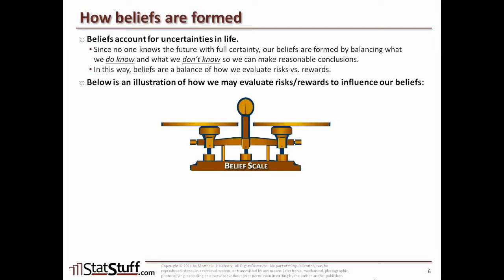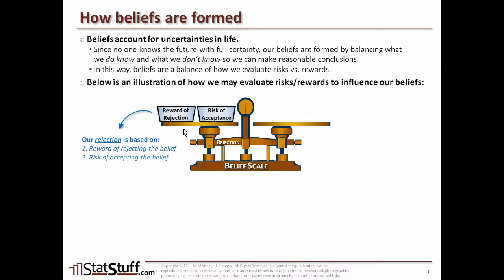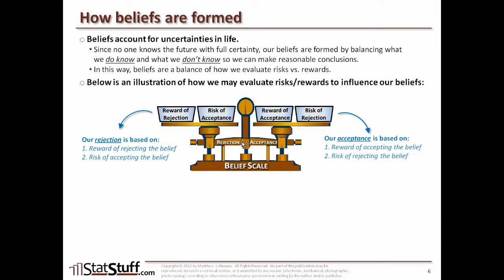To illustrate this, consider a belief scale. On one side is rejection of a belief, filled by the reward of rejecting it and the risk of accepting it. On the other side is acceptance of a belief, filled by the reward of accepting it and the risk of rejecting it. Depending on how we weigh these buckets — risks and rewards on each side — the scale tips toward accepting or rejecting a belief.